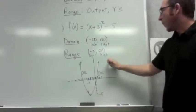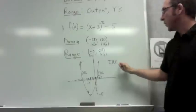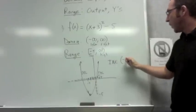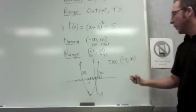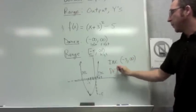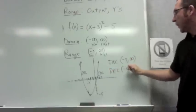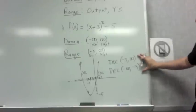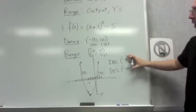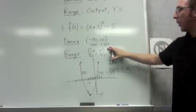So the way we capture all that is by writing out the graphs increasing from negative 3 for the x towards infinity, and it's decreasing from negative infinity up until it hits the x that's negative 3. Notice that the only time I brought in any y values is when I talked about the range.